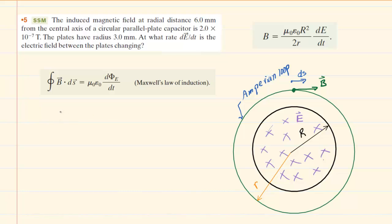In order to calculate the rate at which the electric field between these circular parallel plates is changing, we're going to apply Maxwell's Law of Induction. In order to apply that law, we first have to draw what we call an Amperian Loop.